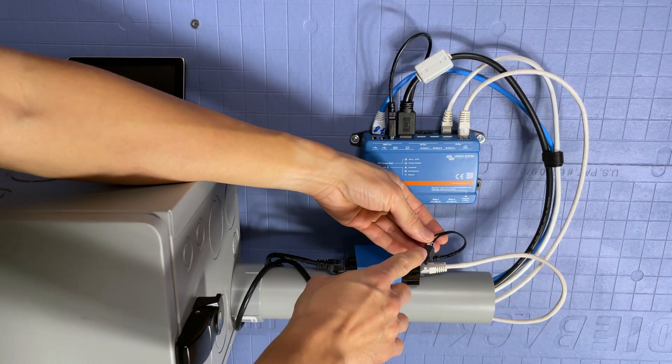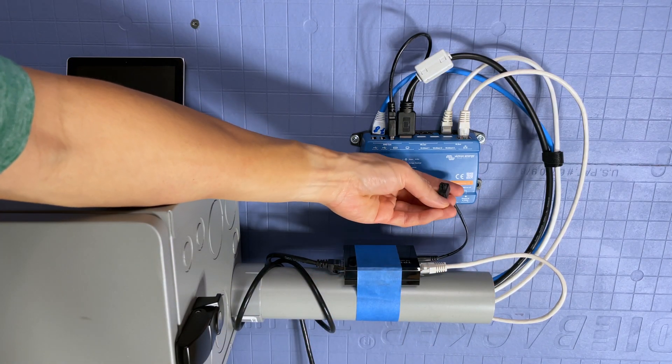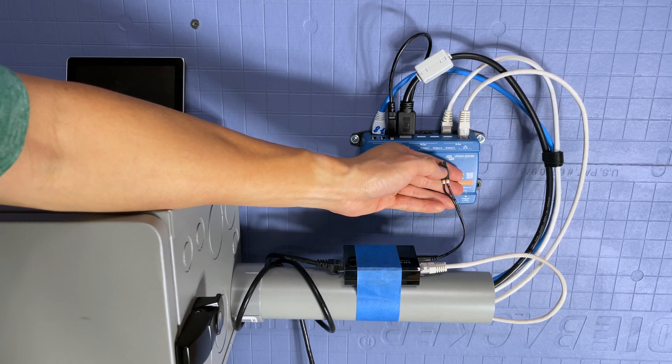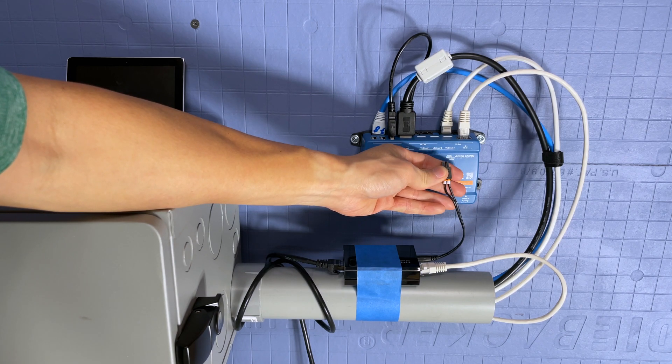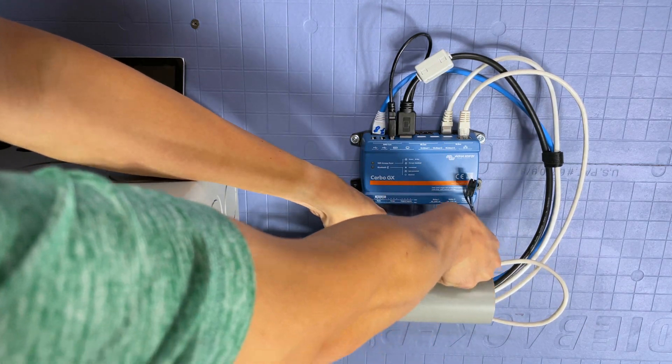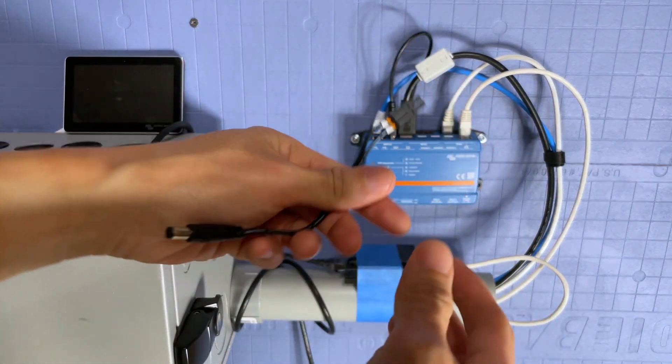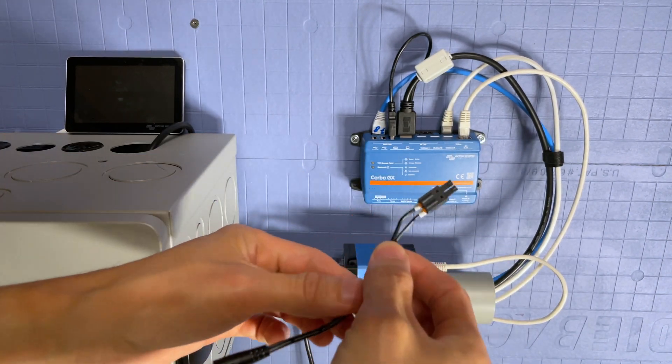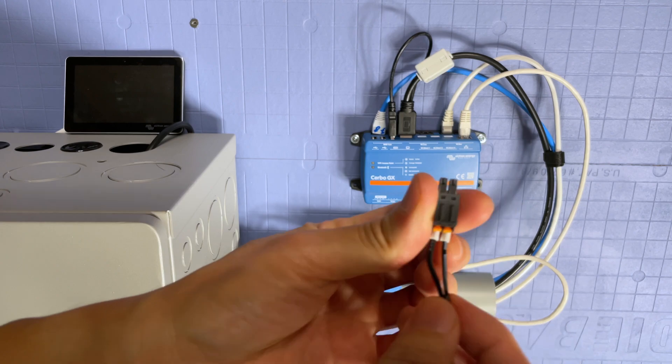So this is the Victron connector that comes with the Cerbo GX. It comes with a red and black wire, which is automatically defaulted and set up in this connection. But if you were to use the PoE splitter device, you just cut the DC barrel connector, you strip the ends, in my case I put a ferrule on it.